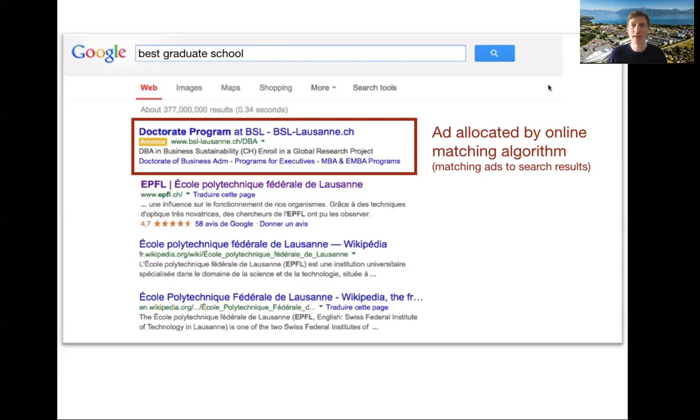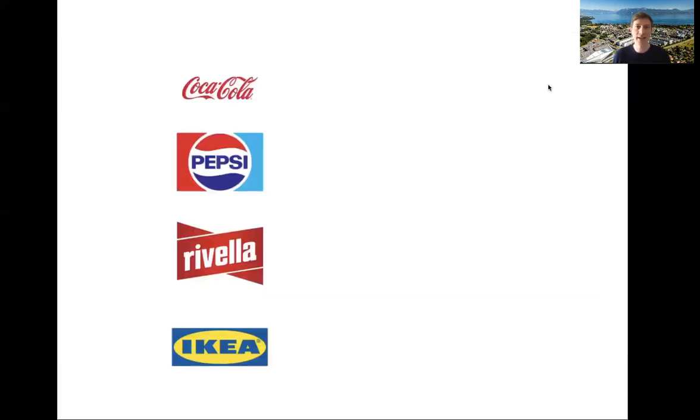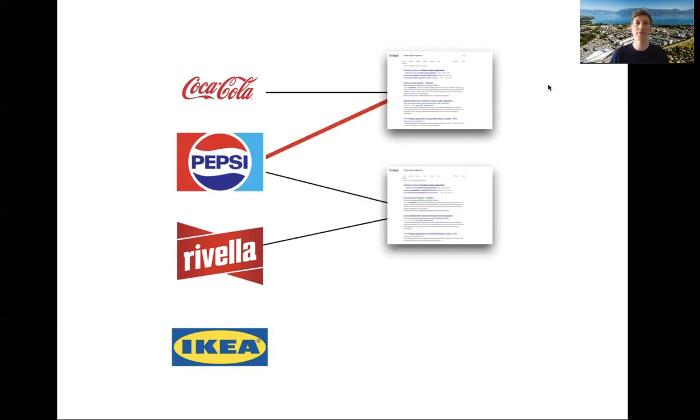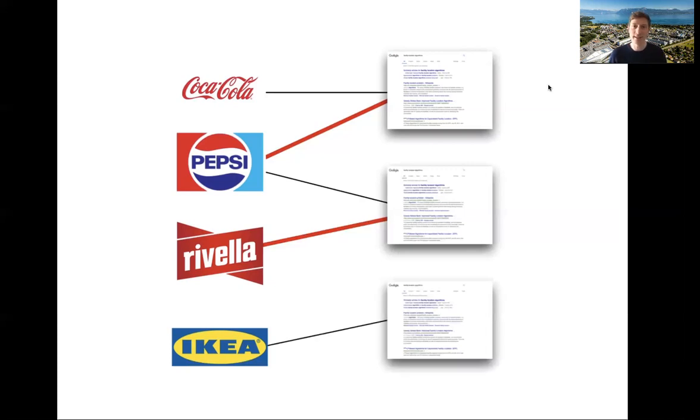So if we look at this problem a little bit more abstractly, we can think of having the advertisers on one side, and then we have the search queries that arrive online. When a search query arrives online, we need to assign a proper ad to that search. So maybe here we have two choices, we could either assign Coca-Cola or Pepsi, we assign Pepsi. Then another search comes, he's interested in either Pepsi or Rivella, that's the Swiss soda, which you will enjoy once you're here. Maybe we assign Rivella, then someone is looking for furniture, so we assign an ad about IKEA, and so on.